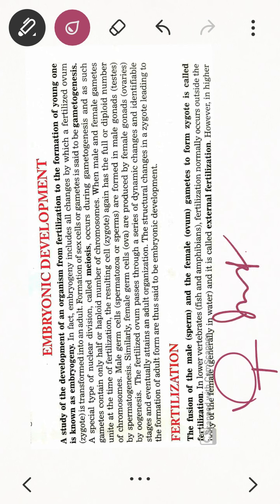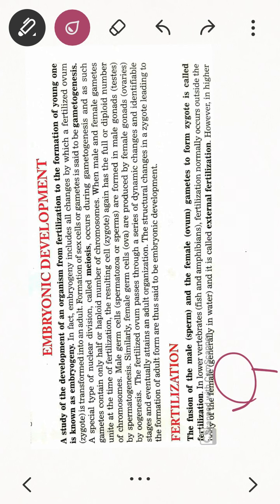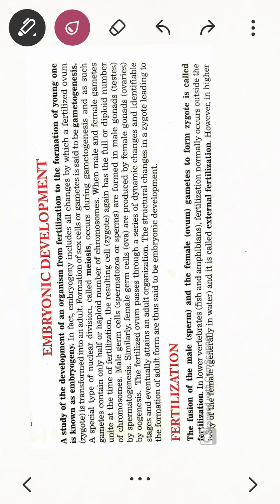After fertilization comes implantation, and after implantation the development of the baby fetus — so development of the fetus is embryogenesis. After embryogenesis, the young ones or offspring are well-developed and will be delivered. This whole process is called embryogenesis or embryonic development.